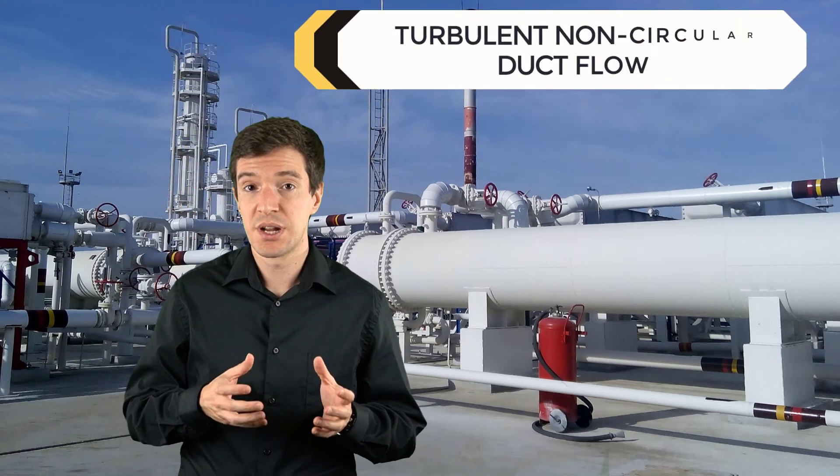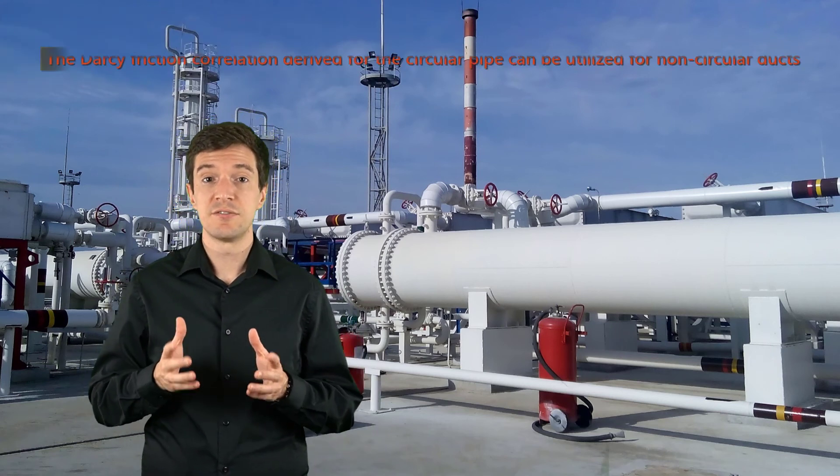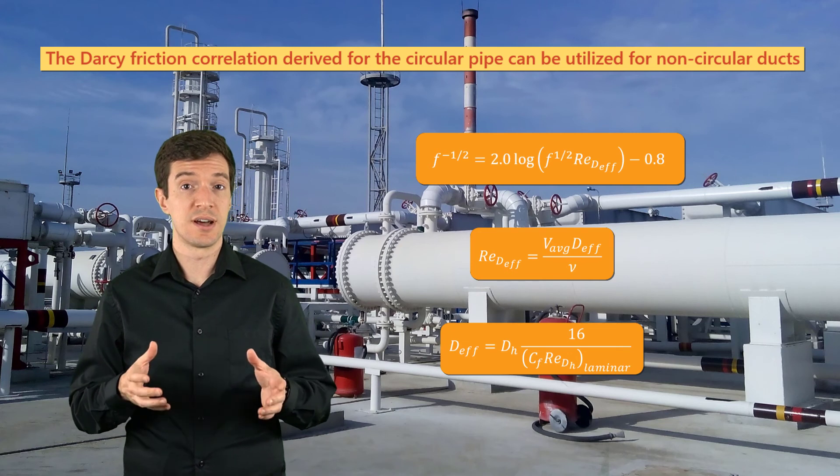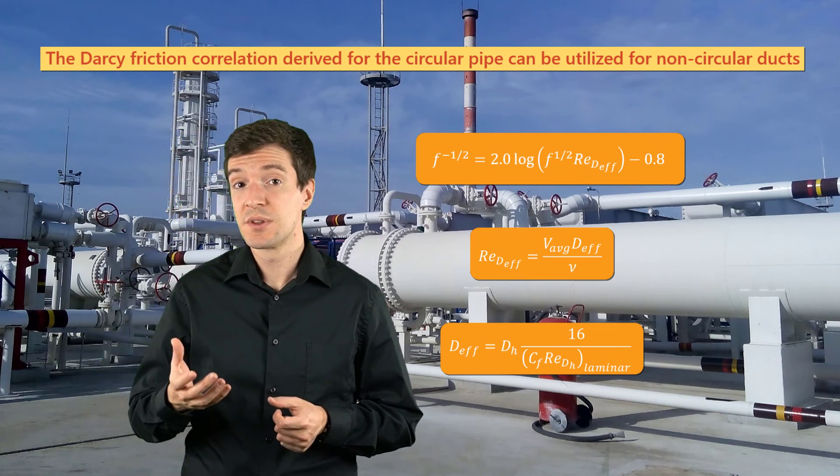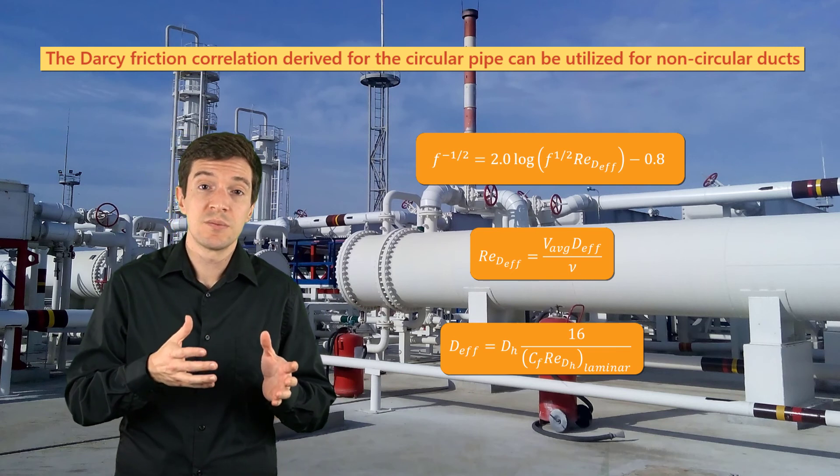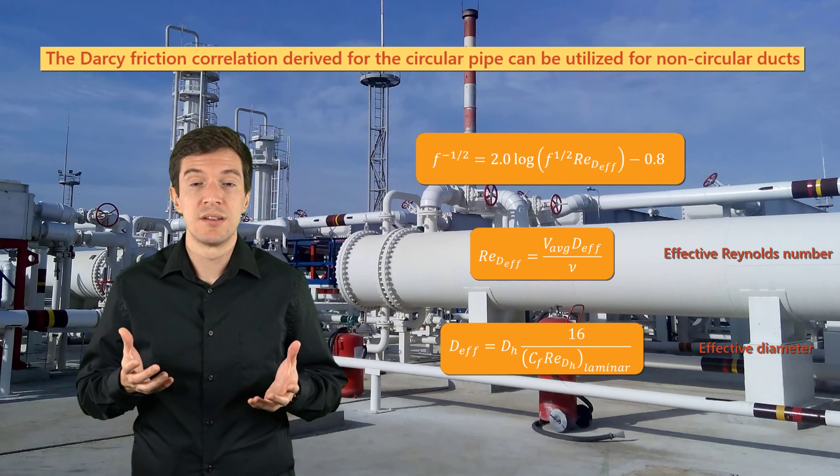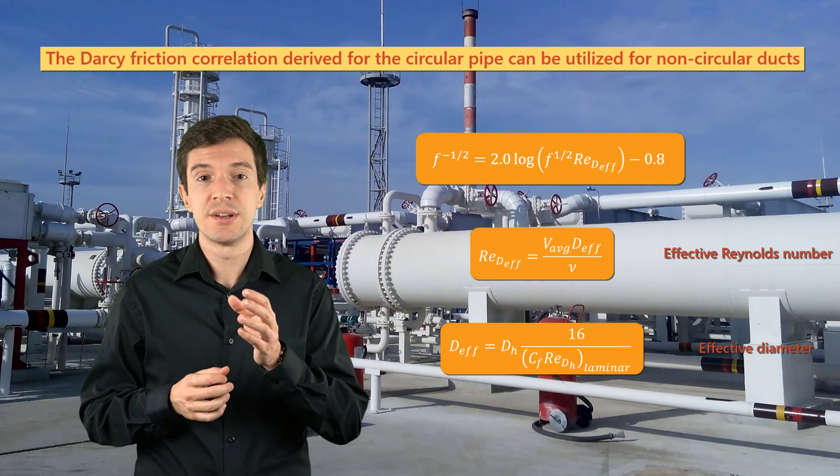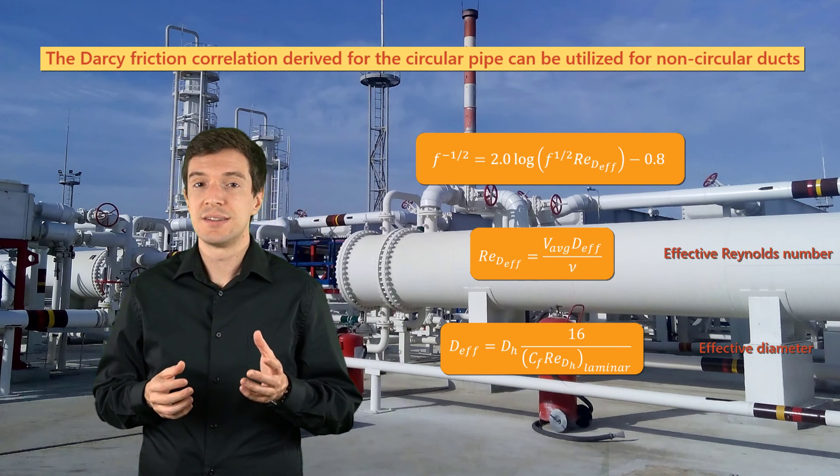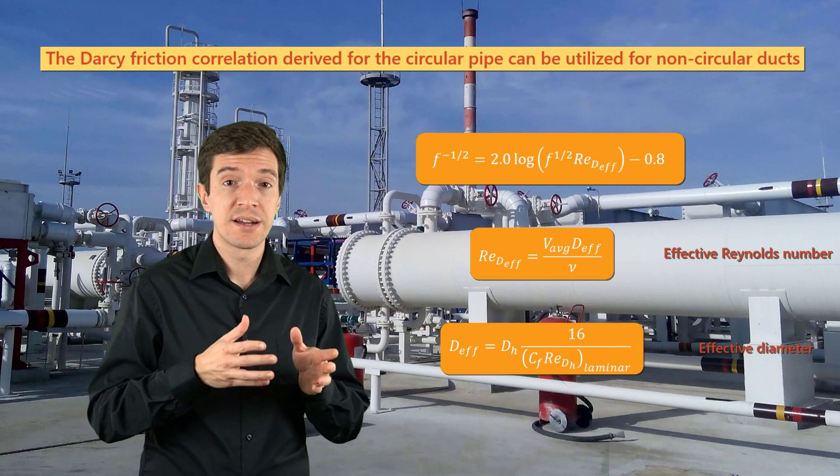The similarity in the expressions and results leads us to the unified expression for non-circular ducts. Indeed, the Darcy friction correlation derived for the circular pipe can be extended for analyzing any non-circular ducts. This simply introducing the concept of effective diameter, that was originally proposed in 1976. The expression uses the effective Reynolds number that is based on the effective diameter. This parameter is calculated using the skin friction coefficient and the Reynolds number calculated using the laminar theory. This relation is purely an empirical correlation that does not have any theoretical background and was only verified through experimental tests on ducts with different shapes.